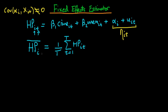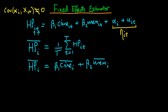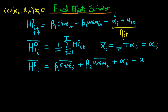If we apply this operation to both sides of the equation, we get that the average house price in city i across time equals beta_1 times the average crime rate in city i across time, plus beta_2 times the average unemployment rate in city i across time. When I take the time average of alpha_i, since alpha_i doesn't depend on time, the average alpha_i is just alpha_i. Then finally we get our averaged idiosyncratic error in city i across all time.